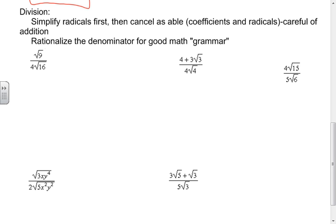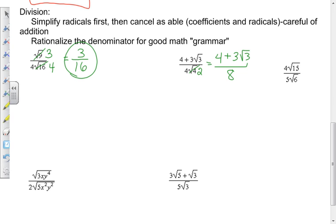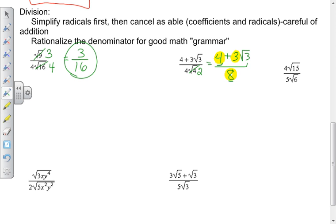The square root of 9 is really 3 and the square root of 16 is 4, so that first example becomes 3 over 4 — done. In the next one, the square root of 3 can't be changed but the square root of 4 is 2, so my numerator is 4 plus 3 radical 3, all over 8. I check for common factors: 4, 3, and 8 do not all share a common factor, so this is my final answer. You cannot cancel the 4 and the 8 because of that addition.